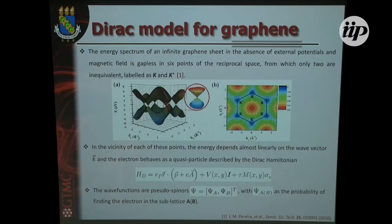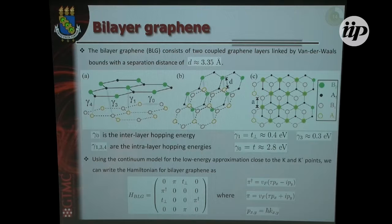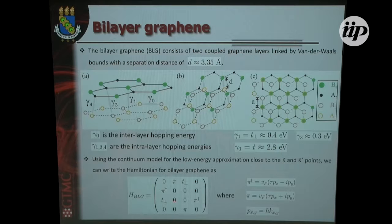Since graphene has two atoms per unit cell, you can describe the wave function as a pseudospinor, where phi_A and phi_B are the probability to find electrons in sublattice A and B. When peeling graphite, you can get two layers — called bilayer graphene. In our tight-binding model, you just use the perpendicular hopping with AB stacking. In the Dirac description you have this four-band Hamiltonian — a four-by-four matrix where P and P-dagger are the momentum operators.